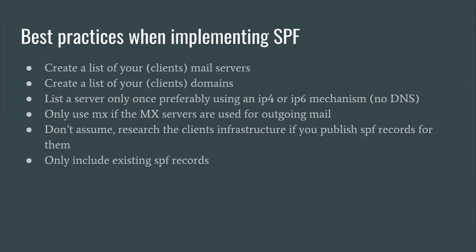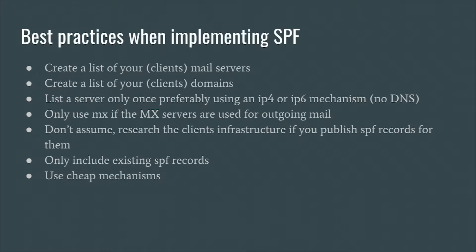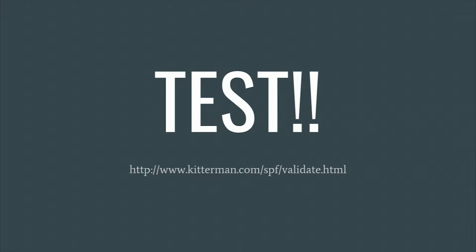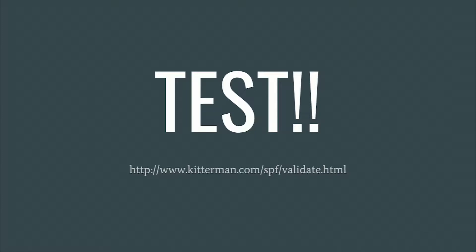Only include existing SPF records, because if you include one that doesn't exist it will automatically fail due to a DNS error. If you can, use cheap mechanisms like IPv4 or IPv6. As the limitation says, don't use more than 10 DNS lookups — so keep your SPF records as short as possible. Last but not least, test. kitterman.com has an excellent validation service — you can paste your SPF record, your mail server IP address, and your email address, and it will check your SPF record against those values to see if you would get a pass or fail.